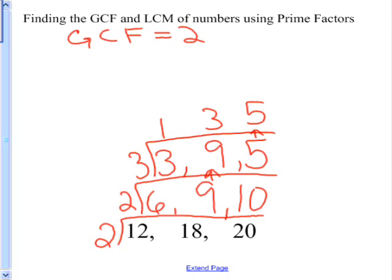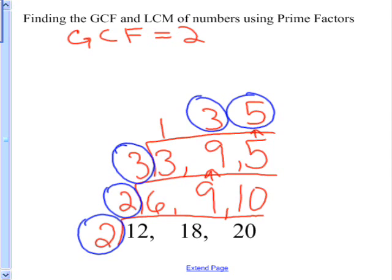To find the LCM, we multiply all of our prime numbers that we found here. So the LCM is 2 times 2 times 3 times 3 times 5, and that is 180.